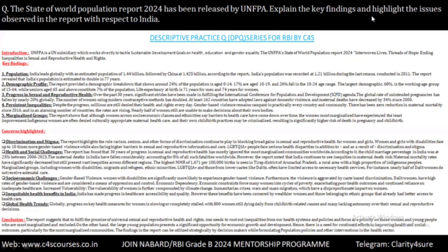Regarding discrimination and stigma, racism, sexism, and other forms of discrimination continue to block broad gains in sexual and reproductive health of women and girls. Women and girls with disabilities face up to 10 times more gender-based violence while also facing higher barriers to sexual and reproductive information and care. The minority group under LGBTQIA+ faces serious health disparities stemming from the stigma and discrimination associated with this group.